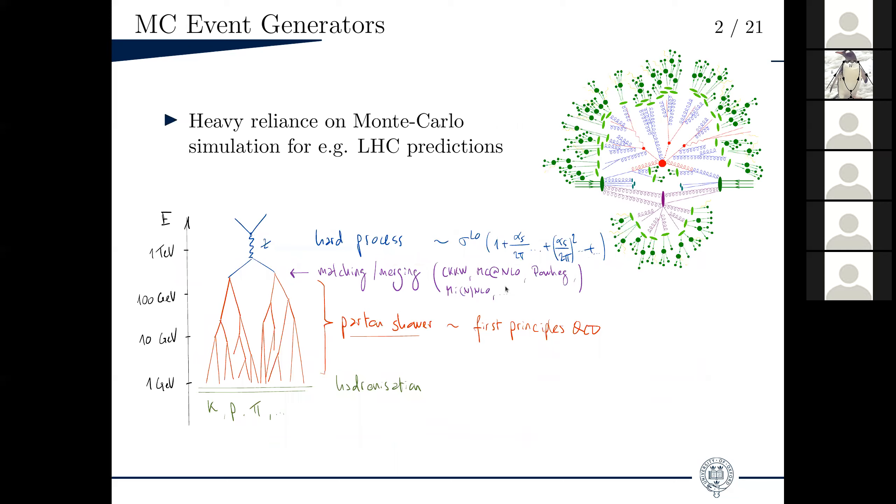These programs take full advantage of QCD factorization theorems, meaning that the energy scale of the hard process, the hard collision, the hardest particle, is on average well separated from the energies of the subsequent quarks and gluons that are produced, which themselves have, on average, a higher energy than the final hadrons that you pick up in your detector. Because these different processes happen on different timescales, essentially, they can be more or less factorized.